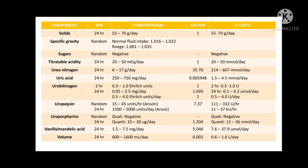Under urobilinogen, if you use Ehrlich units as the unit of measure, the conversion factor used is 1. But if you use milligrams per day, then the conversion factor is 1.693.